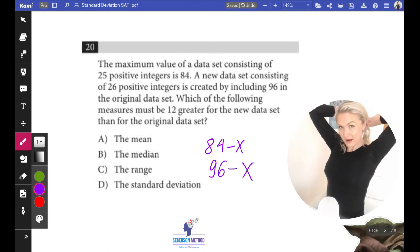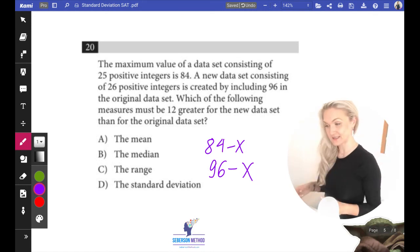We know that x is a positive value. How do we know that? Because they tell us it includes 25 positive integers.